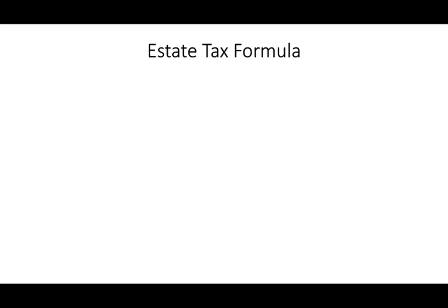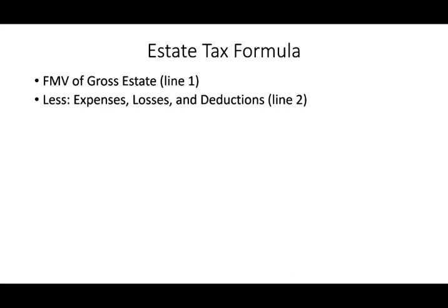I'm going to start this session by looking at the estate tax formula, because it's very important to look at the overall picture. Then we're going to drill down within each line. The first thing we do is compute the fair market value of the gross estate — that's line one. Then we deduct the expenses, losses, and deductions, which is line two. I'll cover line two in a separate session. Line one minus line two gives you the taxable estate.